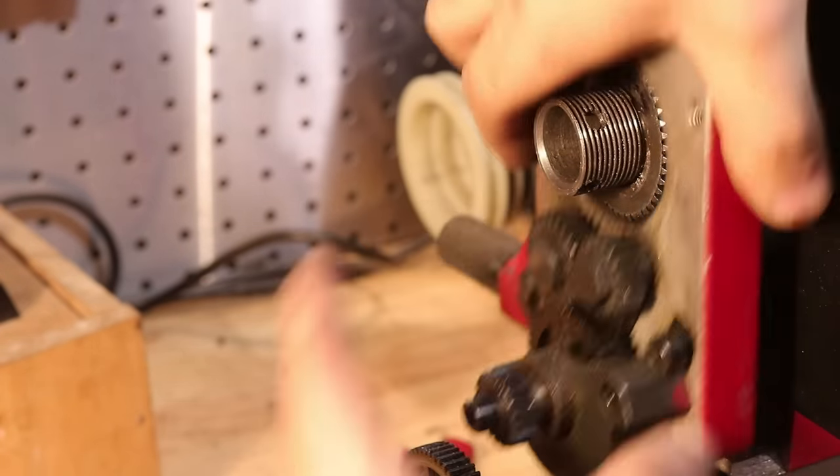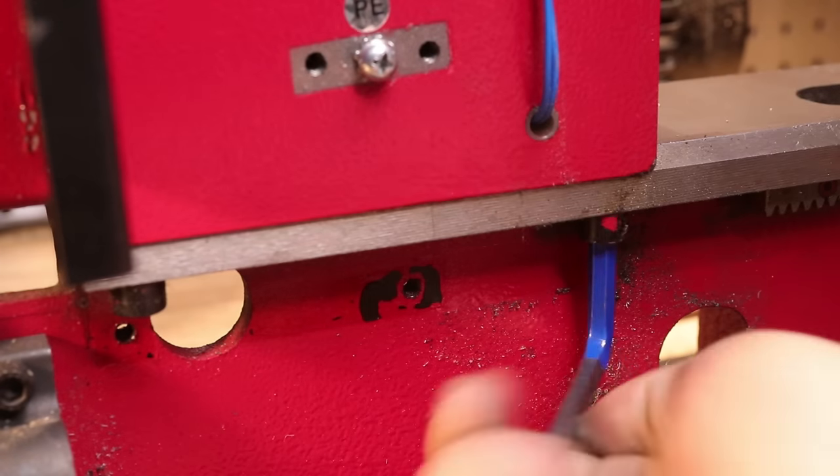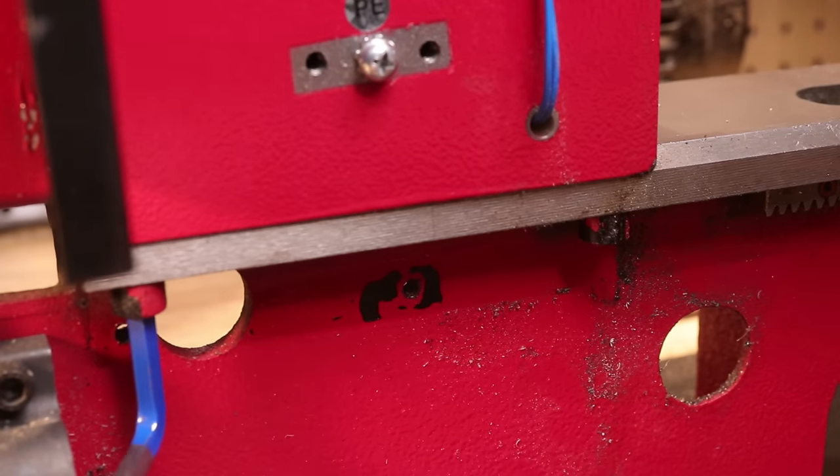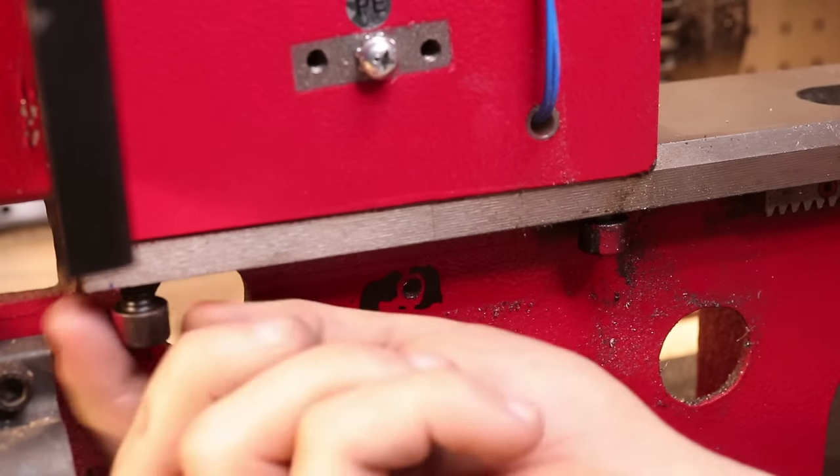The spindle housing is usually bolted to the bed using two hex socket screws on the front of the lathe and a hex headed bolt above where the motor is mounted.